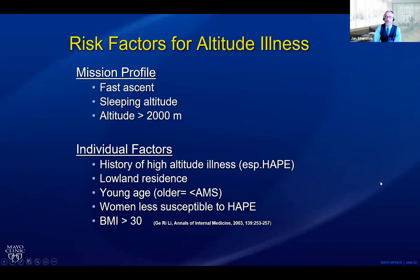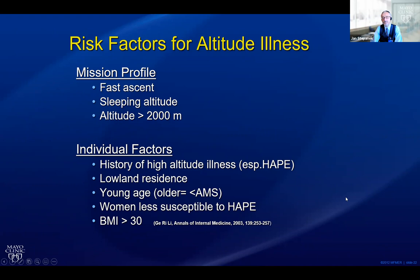Common sense: to get mountain sickness, you need to go fast and sleep at high elevation, typically exceeding 2,000 meters. Individual factors play in — have you had previous altitude-related disorders, notably high altitude pulmonary edema? Do you reside in the lowlands? Are you young or older? There is an advantage to aging — mountain sickness may be tied to subtle brain swelling, and older individuals have more atrophy, so more room to swell, whereas younger people get symptoms quicker. Women tend to be less susceptible to pulmonary edema. Being very overweight puts you at risk through alterations in breathing and sleep.